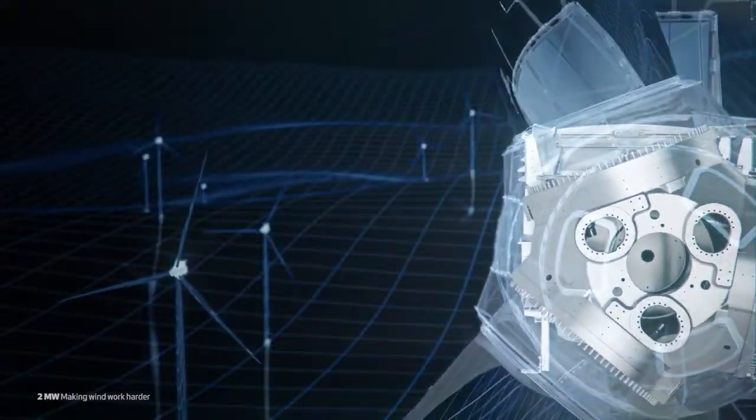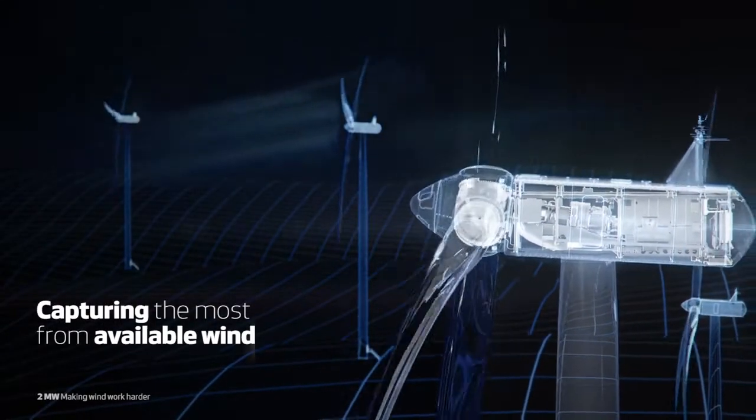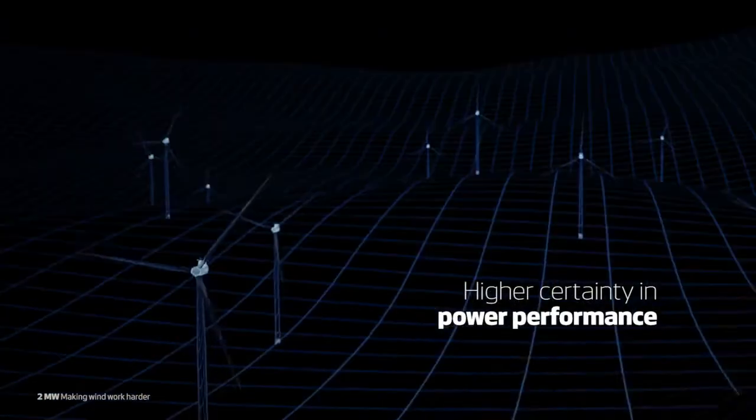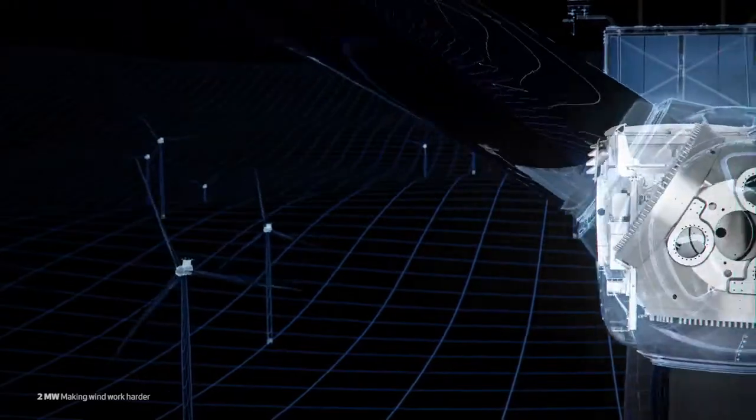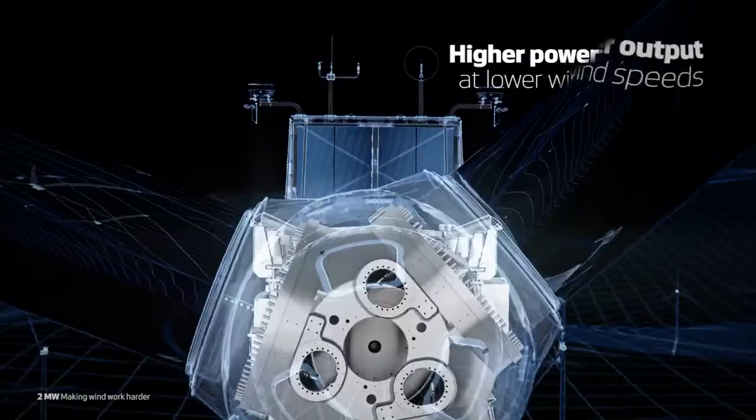The 2MW variants are designed to capture the most from available wind. The 120 meter rotor means a higher certainty in power performance, delivering more stable energy production and a higher power output at lower wind speeds.